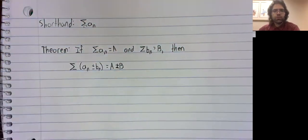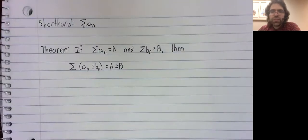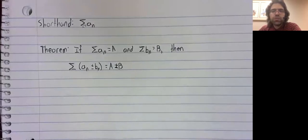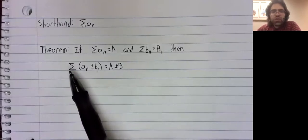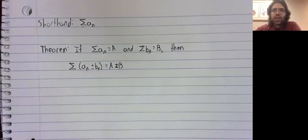Our first result is as follows. Suppose you have two convergent infinite series, and you build a third infinite series out of them using addition or subtraction. Then this third infinite series converges, and it converges to the natural thing. This is intuitive.